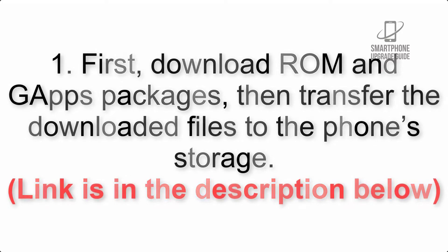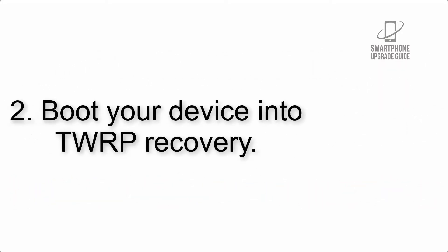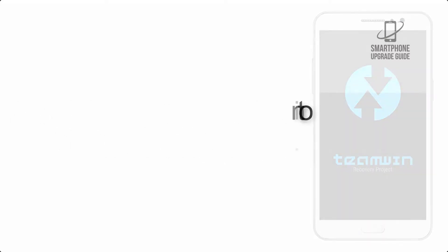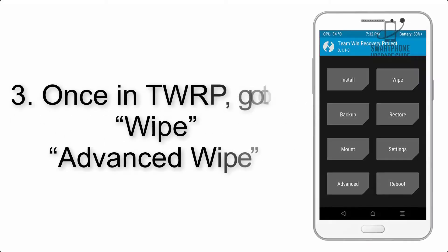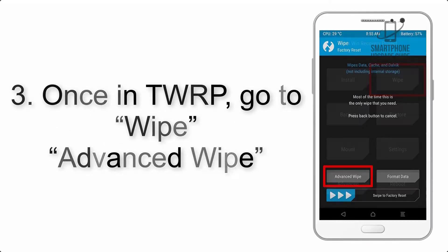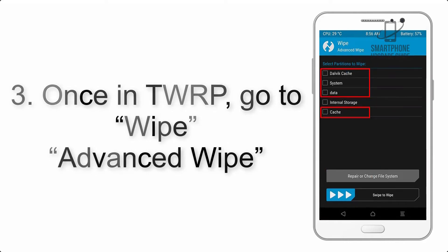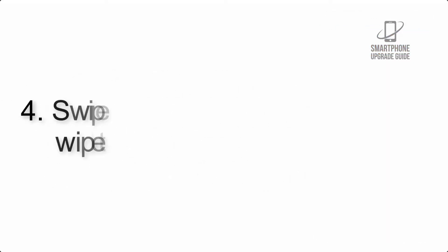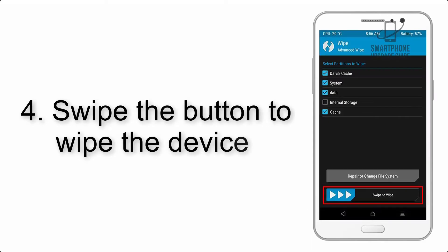Step 2: Boot your device into TWRP recovery. Once in TWRP, click on Wipe, then Advanced Wipe, and select the checkboxes as shown in the image, excluding internal storage.